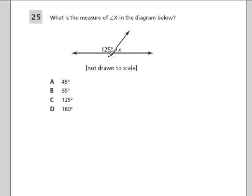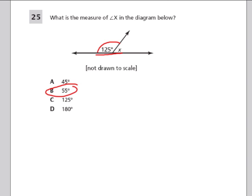Again, a straight line. We know this is 125 degrees, so x and 125 are supplementary. x plus 125 must equal 180, so x equals 55 degrees. And that's it — hope that helped.